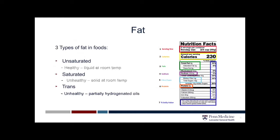Unfortunately, the only two types of fats required to be listed on the food label are saturated fats and trans fats. Saturated fats are solid at room temperature, and trans fats, equally as unhealthy, are usually found in partially hydrogenated oils, which would be indicated as such on the ingredient list of the Nutrition Facts Label. The unsaturated fats are the healthy fats — they remain liquid at room temperature.